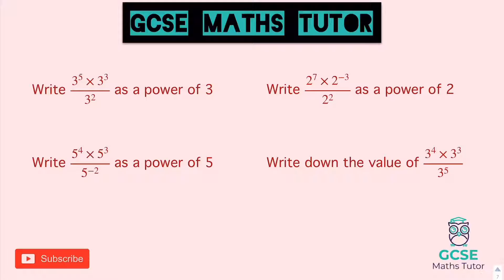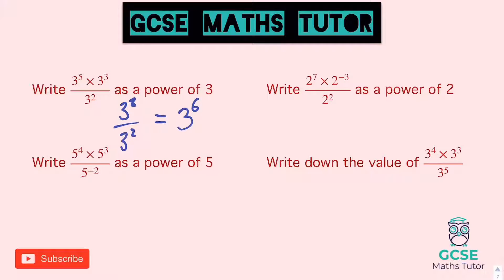So the first one: on the top there, we'll add the powers together — so we get three to the power of eight — and we're dividing that by three squared. Taking away those powers, we get three to the power of six. And it does say to write it as a power of three, so I'd leave my answer just like that.